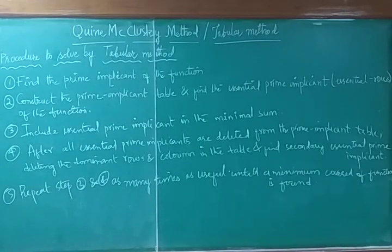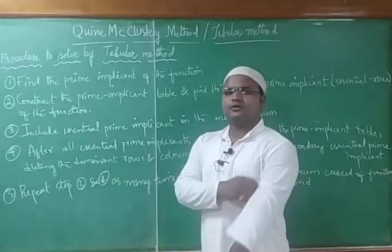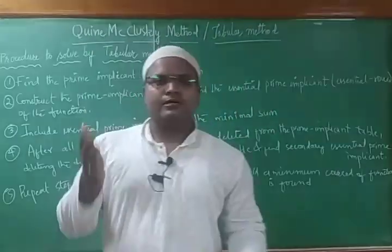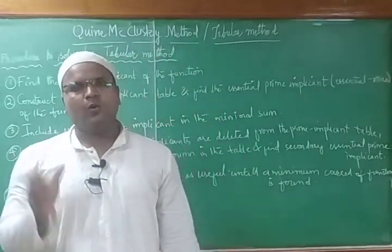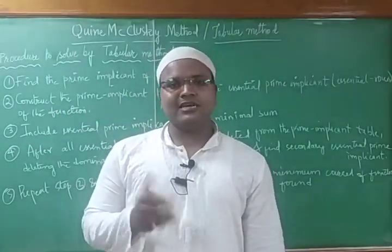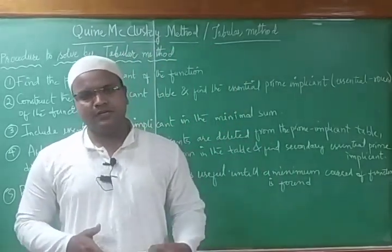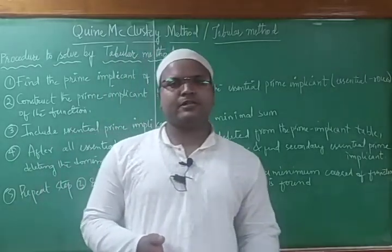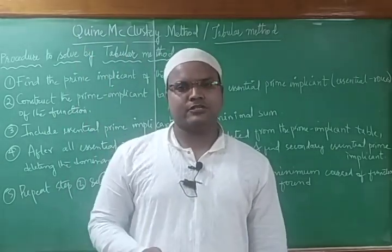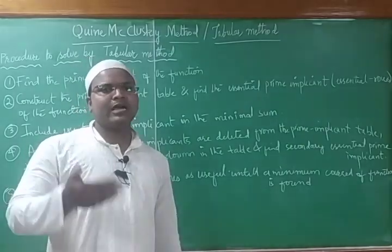Our next topic is the Quine-McCluskey method, also called the tabular method. This is the last topic of Unit 1. When we discuss Boolean functions, we try to minimize them using Boolean laws, De Morgan's theorems, or KMAPs. The tabular method is another essential and effective method to minimize a given Boolean function by taking it in a specific order and eliminating redundant terms.